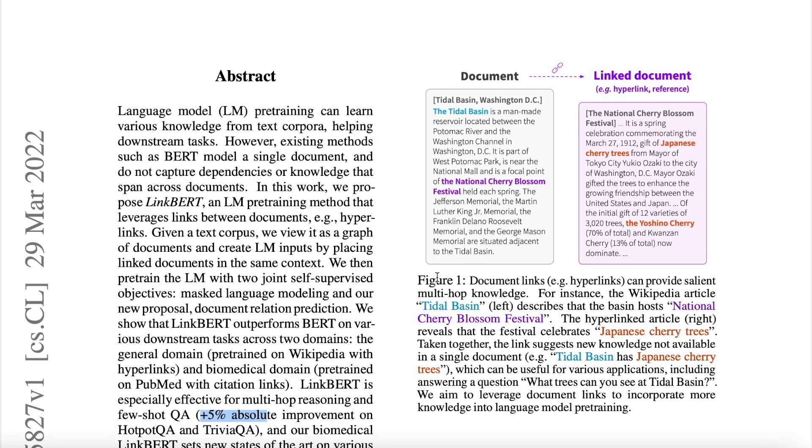So for example, if you see this Figure 1, this is the actual document around Tidal Basin, Washington DC, where it talks about the tidal basin which is a man-made reservoir. It also talks about its location where it says it's a focal point of National Cherry Blossom Festival held each spring. Now if I want to ask any question around this festival and this was the document that was given to me, it's pretty much not possible for me to give out the answer unless the pre-training corpus on which BERT was trained already has some context around what it is. But yeah, we cannot be dependent on that, right? So this is where LinkBERT comes into play.